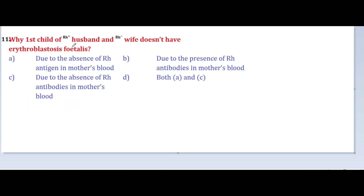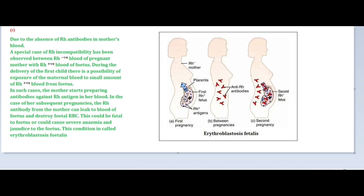Next question: why is the first child of an Rh-positive husband and an Rh-negative wife not affected by erythroblastosis fetalis? Options: due to absence of Rh antigen in mother's blood; due to presence of Rh antibodies in mother's blood; both A and C. In the case of erythroblastosis fetalis, there is a special case of Rh incompatibility between the Rh-negative blood of the pregnant mother and the Rh-positive blood of the fetus.